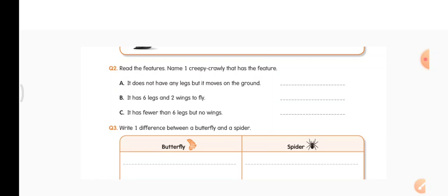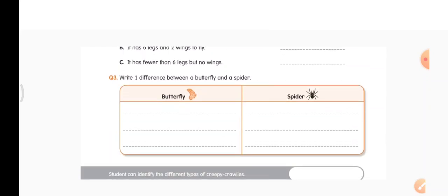C — it has fewer than six legs but no wings — lizard, L-I-Z-A-R-D. Write one difference between a butterfly and a spider. You can write: butterfly can fly, spider cannot fly.